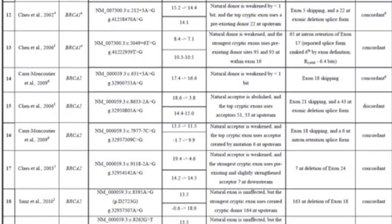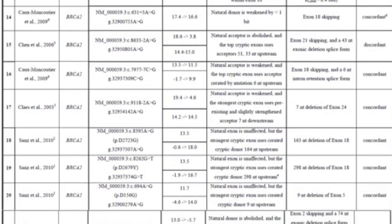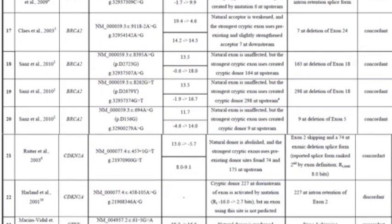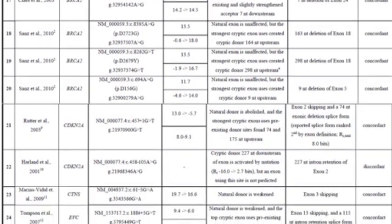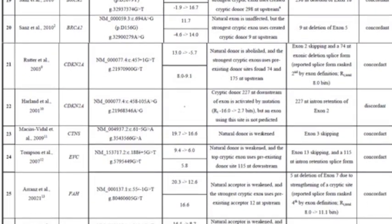It correctly predicts the weakened natural splice site and any activated cryptic exons. Out of 35 mutations that activated a cryptic site in supplementary table S2 and S3, 25 were ranked first, 7 more in the top 6, and only 3 were lower ranked or not predicted at all.